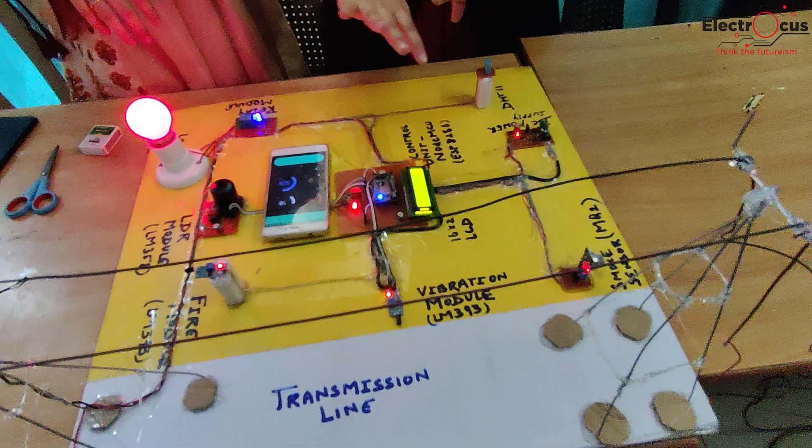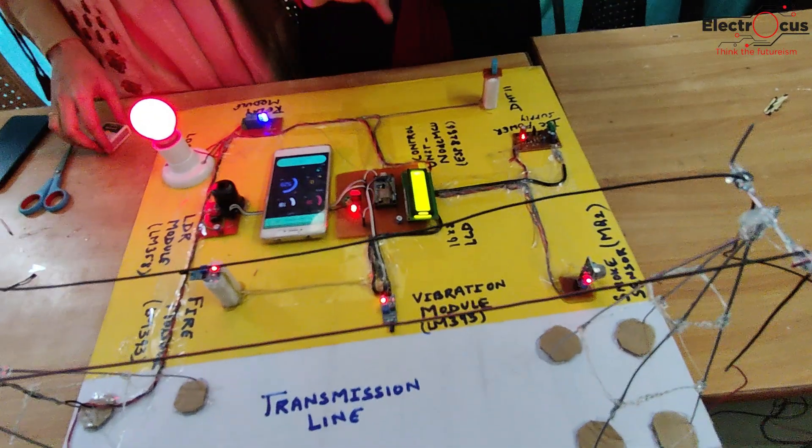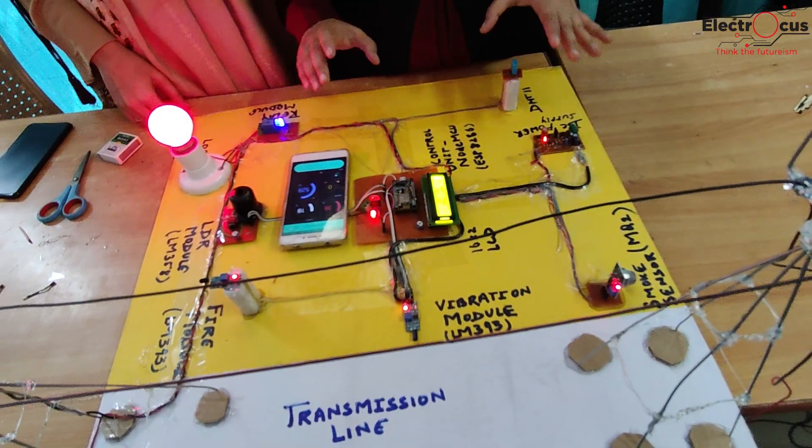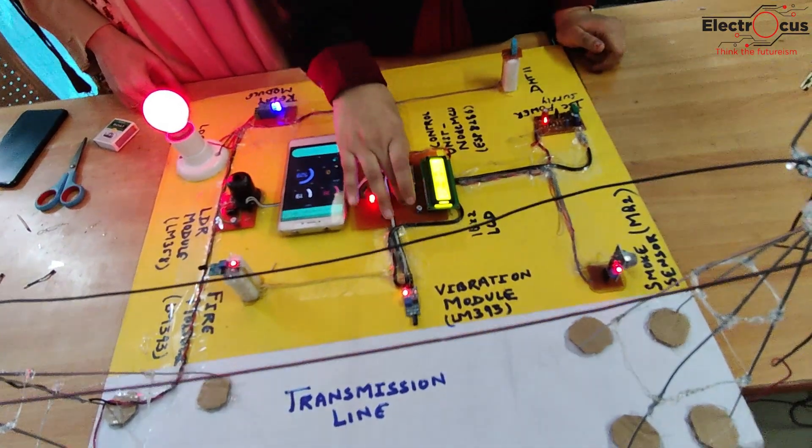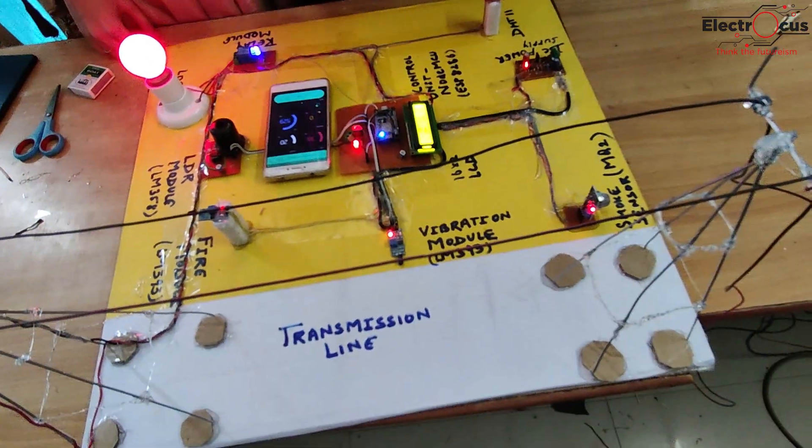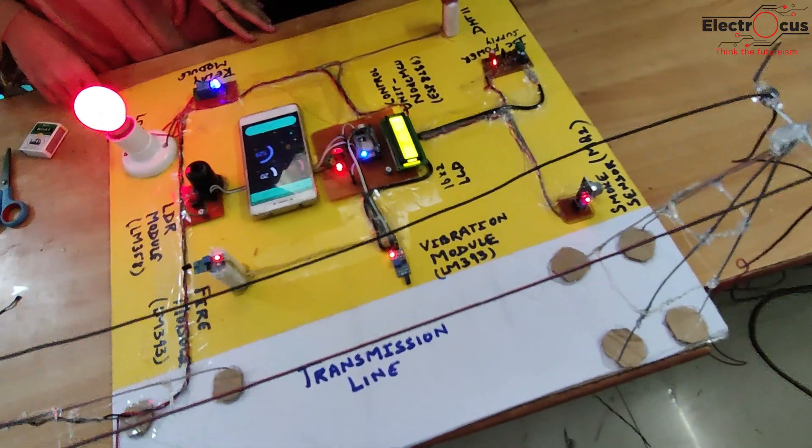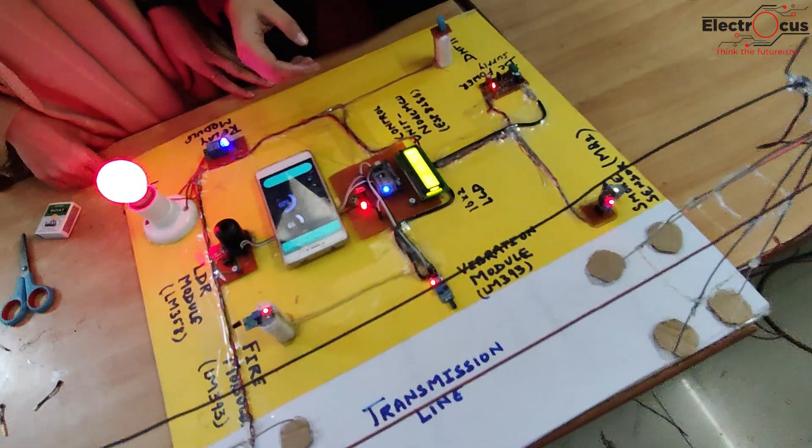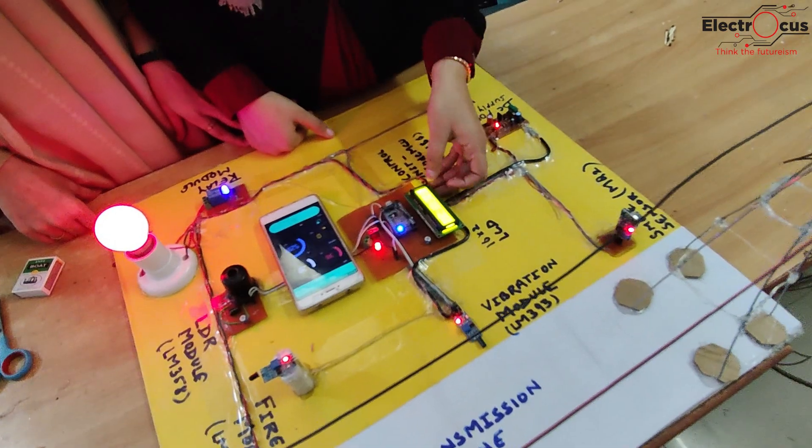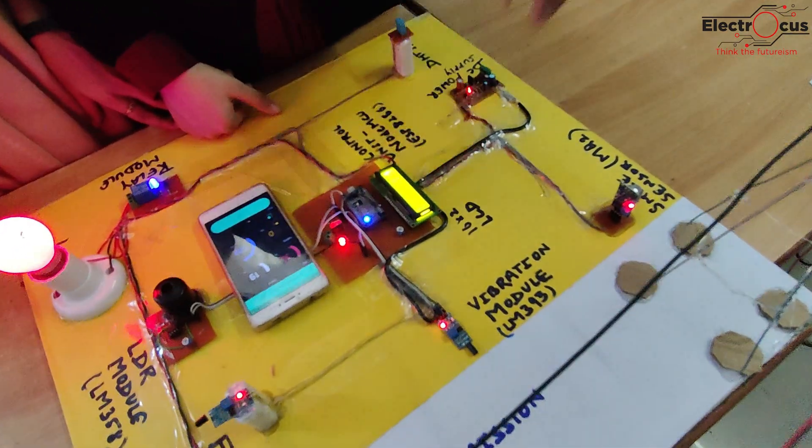Basically all the output of the sensors, all the sensors' outputs are connected to this Node MCU module. So if there is any detection, any natural disaster occurs.